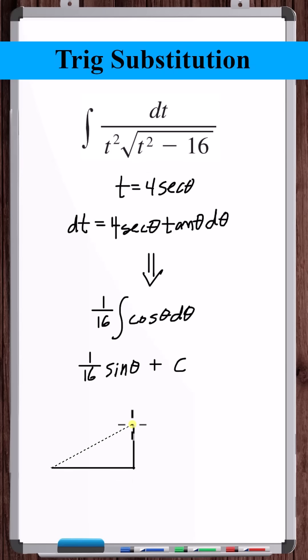Well, we draw a right triangle with angle theta here and come back to our original trig substitution. What we see is that secant theta is equal to t divided by 4, but secant theta is 1 over cosine theta, so cosine theta is 4 over t.